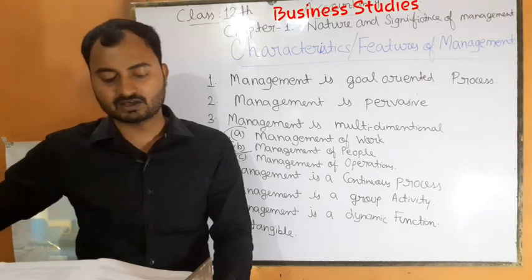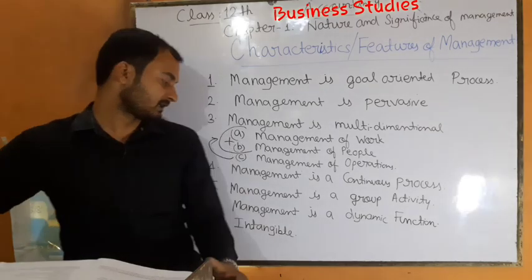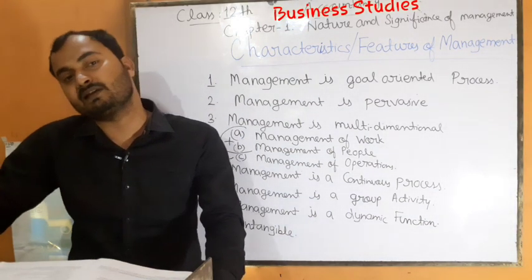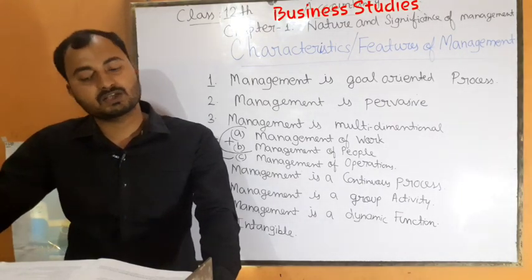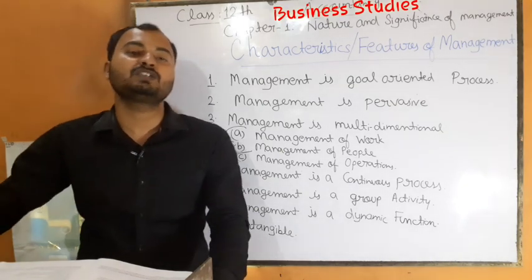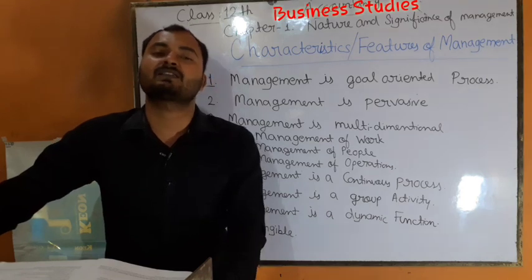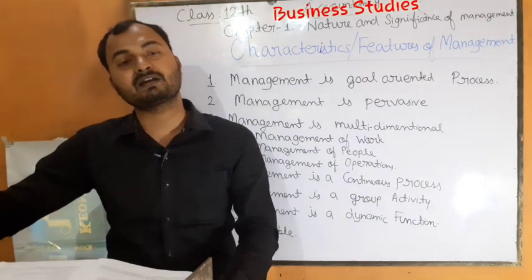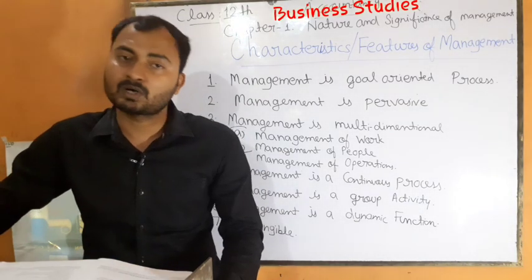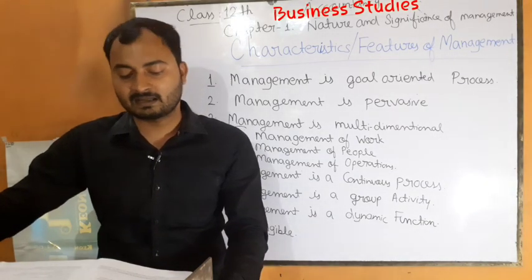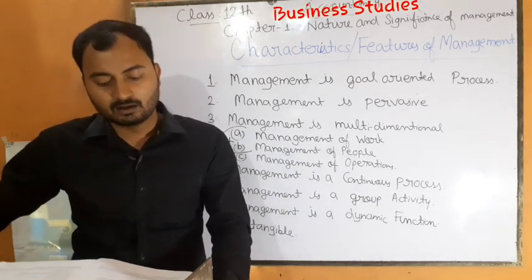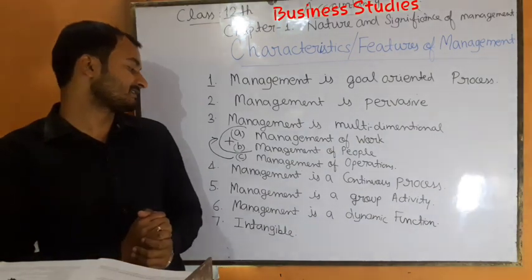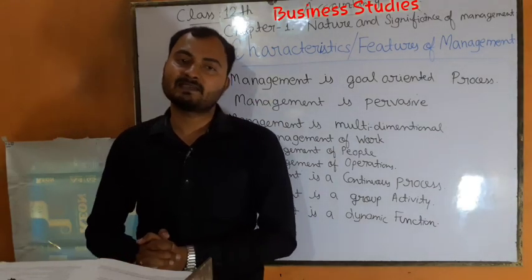Seventh point: management is intangible। Intangible का मतलब है which cannot be seen or touched। Management functions can't be physically seen or touched, but their presence can be felt। अगर properly management है किसी organization में तो organization के goals achieve हो रहे होंगे, growth हो रही होगी, profit बढ़ रहा होगा, customers और products increase हो रहे होंगे। The presence of management can be felt by seeing the orderliness and coordination in the working environment।